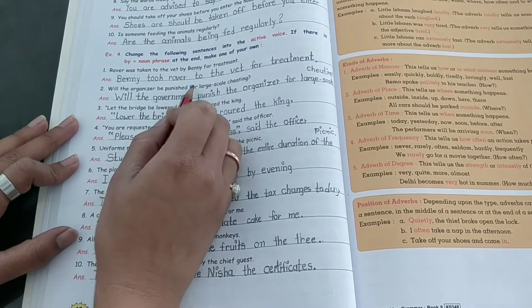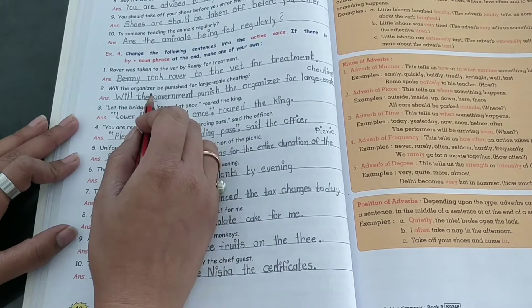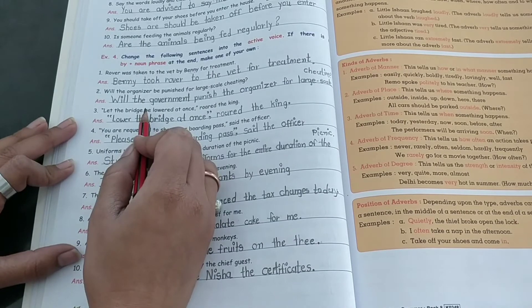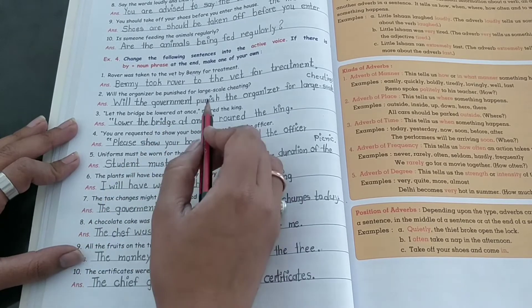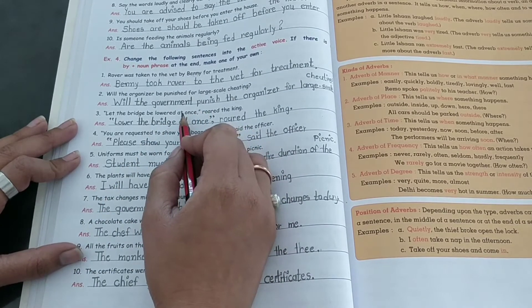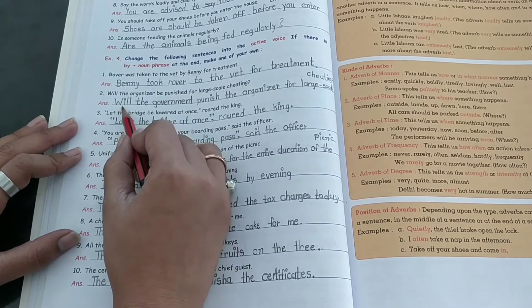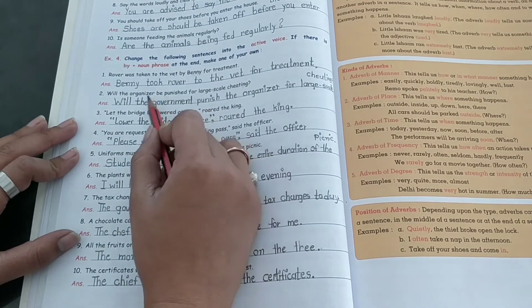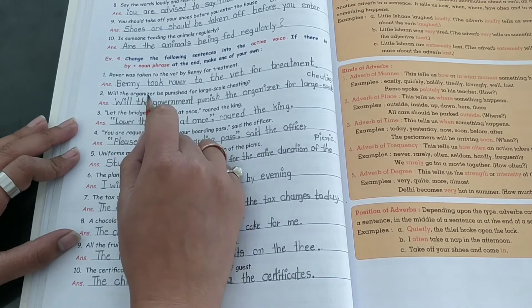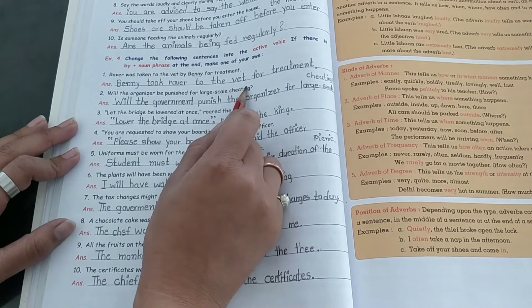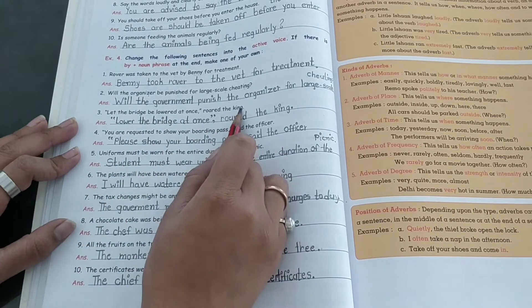ઓરગેનીજાસેસેર બેનીજાસેસેસેસે વરગેનીસેસેસેસેસે જ પણ એની જે અમુક અથોરીટિસે હે ગવર્મેટ પાસે હેસેસેસે એટ લામાં ગવર્મેટ નો બેક છેસે એઠે